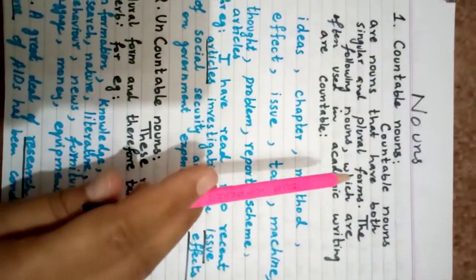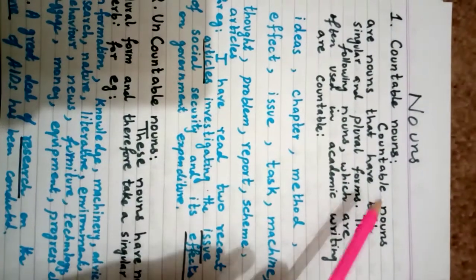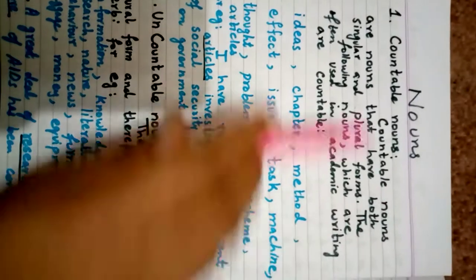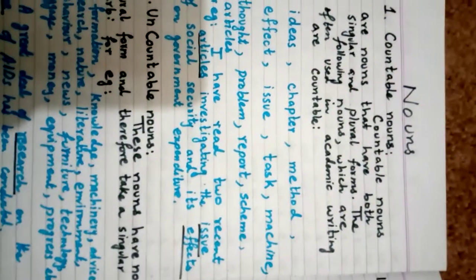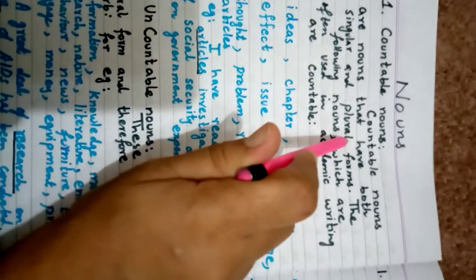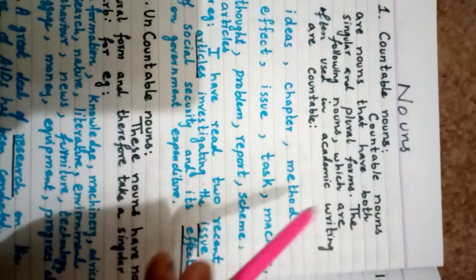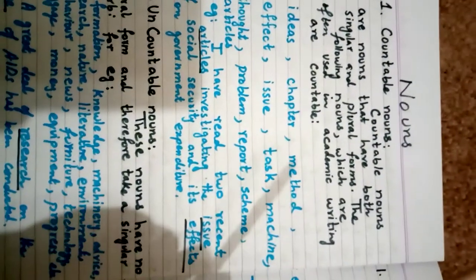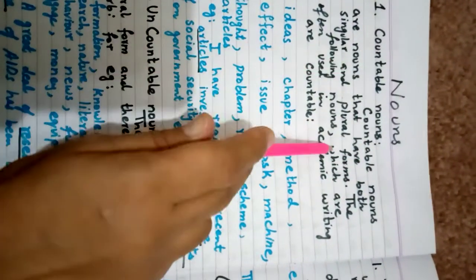In the video on Kinds of Nouns, I described Countable Nouns. We were learning about this. You learned the definition that Countable Nouns are those nouns which can be counted. They can be plural, like pens, and have both singular and plural forms.